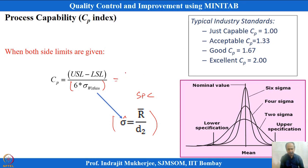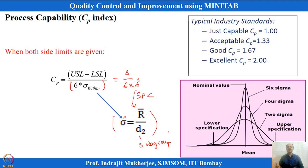Delta is the difference between the upper and lower specification limits, and 6 multiplied by the standard deviation estimate gives the voice of the process. The subgroup size is used to define d2 values. Whenever the process is in statistical control, we can calculate the CP index as delta divided by 6 standard deviations. The underlying assumption is that the CTQ follows a normal distribution and the process is perfectly centered on the target.